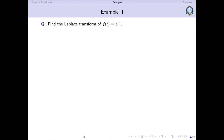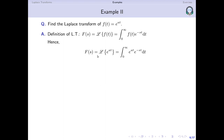Next we find the Laplace transform of e to the power at. Using the definition, L of e to the power at equals the integral from 0 to infinity of e to the power at times e to the power minus st dt. Taking t common in the exponent, we get the integral of e to the power (a minus s) times t dt. Integrating gives e to the power (a minus s)t divided by (a minus s), and we substitute the limits. Here also there are three cases.